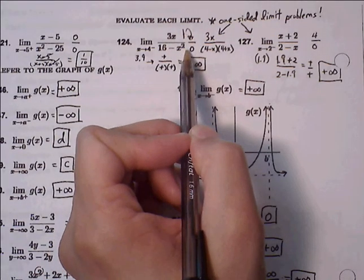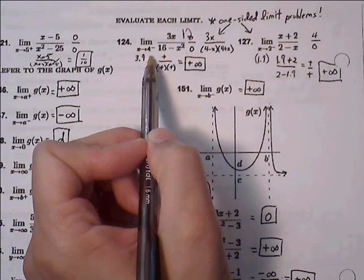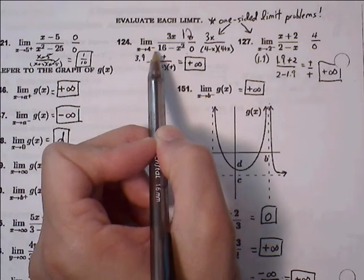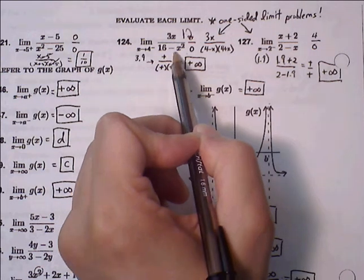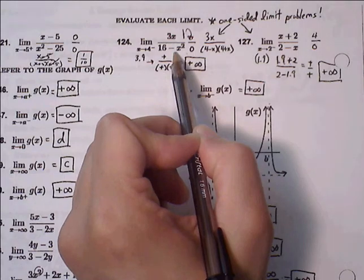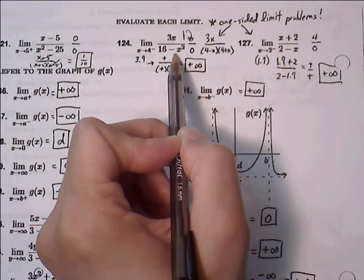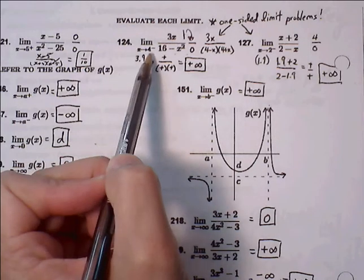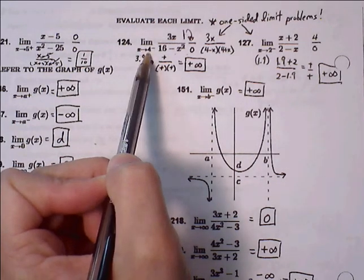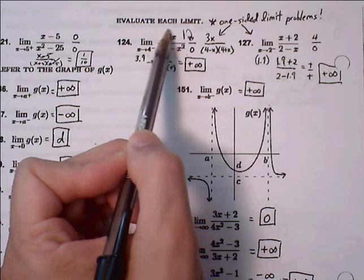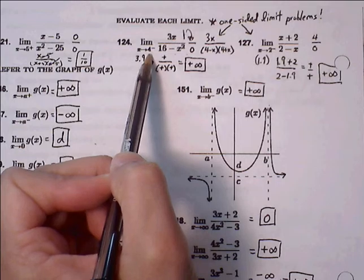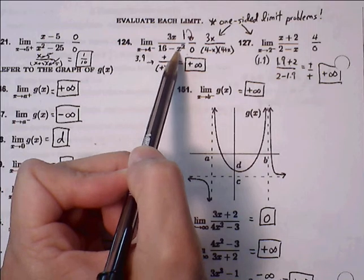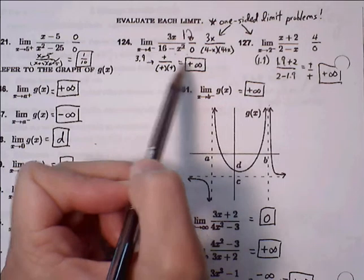Because we get 12 over 0, that normally should be a limit that does not exist. However, we're evaluating the limit as x approaches 4 from the left side, so we can't just say it does not exist. We can see the graph is approaching a vertical asymptote, so we have to decide if it's approaching positive or negative infinity. We resort to using decimals — a value close to 4 on the left side is 3.9. Plugging 3.9 into the numerator gives a positive value. 3.9 squared is less than 16, so 16 minus 3.9 squared is positive. Positive over positive is positive infinity.